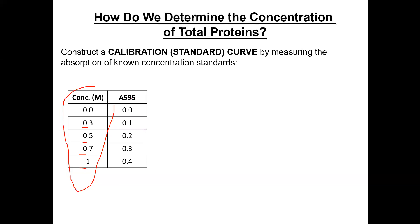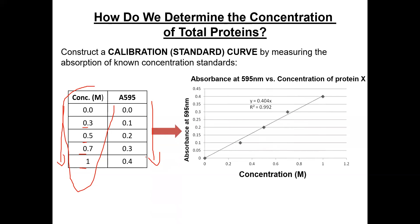We then measure the absorbance. As we increase the concentration, we increase the absorbance — this follows the Beer-Lambert Law. We construct the standard curve, which produces a straight line called the best-fit line. Since some points may not be perfect, you draw the best line that fits the data. This is part of your assignment — the first step is to draw the standard curve based on your experimental results.